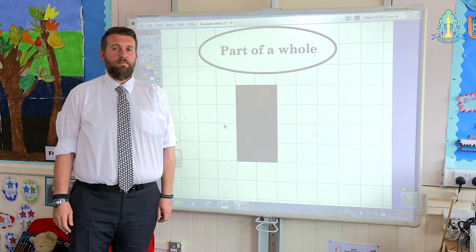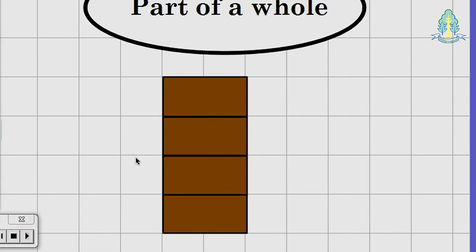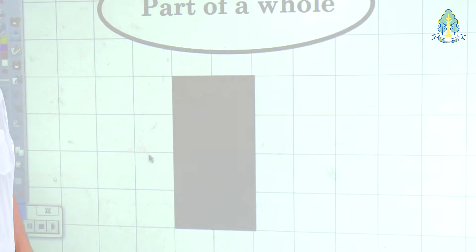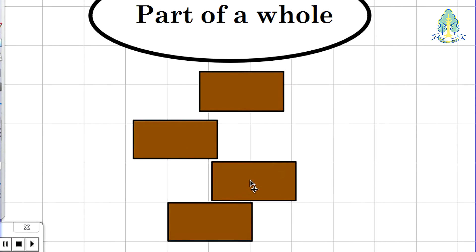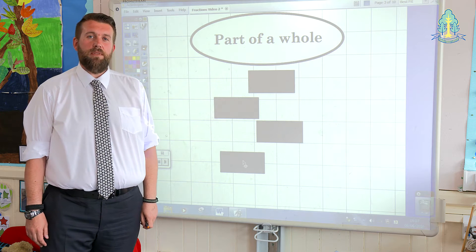Children will be told that a fraction is part of a whole. Teachers may use an example like this to show the children. The chocolate bar here is the whole. When we split the chocolate bar up, each part is a fraction of the chocolate bar.